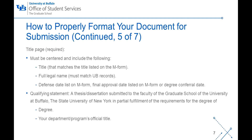The title page is required and must be the first page of your document. The information on this page must be centered and include the title, your full legal name, your defense date, final approval date or degree conferral date, qualifying statement, degree, and your department or program's official title. The title, defense or approval date must match the information on the M-Form, and your legal name must match UB records.